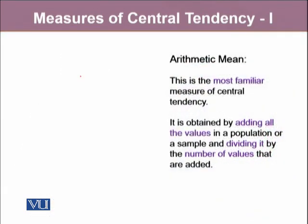Arithmetic mean is the most familiar measure of central tendency. It is obtained by adding all the values in a population or a sample and dividing it by the number of values that are added. Any measure that comes from the population is called a population parameter.